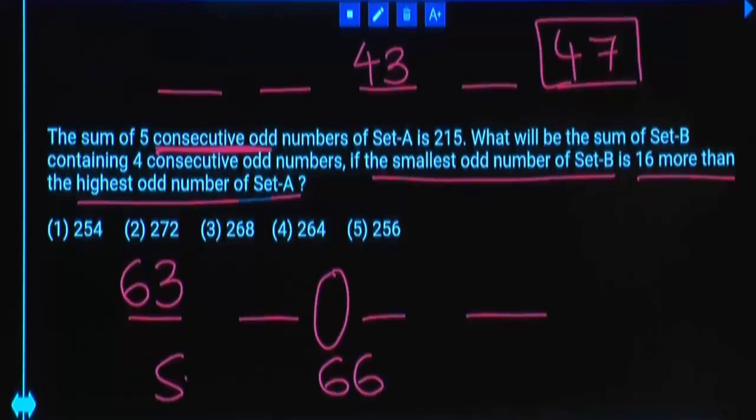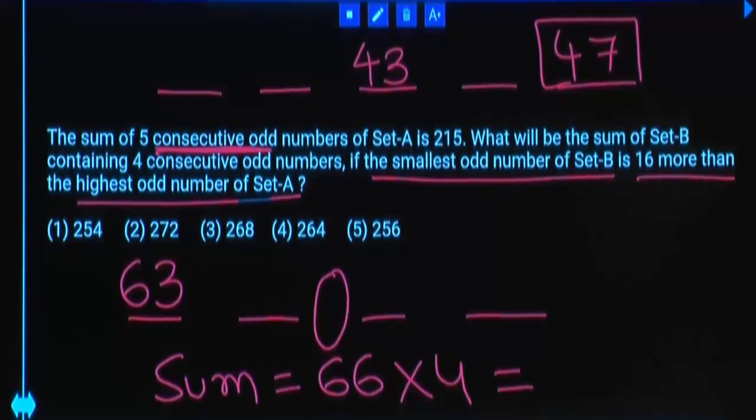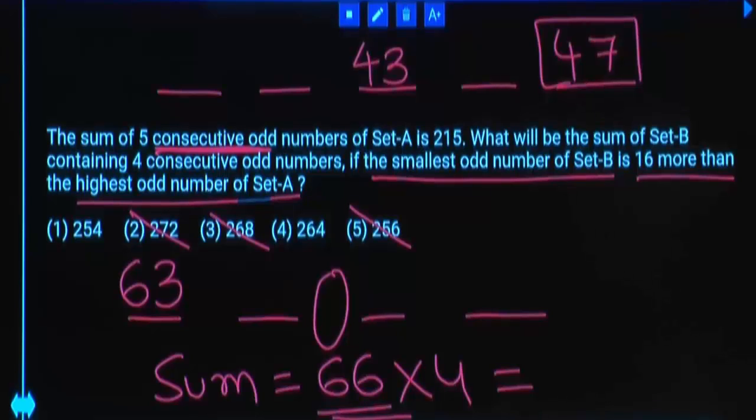If you want to calculate sum of 4 numbers, that is average multiplied by number of numbers. 66 times 4 should end with 4. How many options are there? 2 options. 66 is which multiple? 11 multiple. Answer also should be 11 multiple. Is your first option which is ending with 4 is 11 multiple? Then final answer 264.